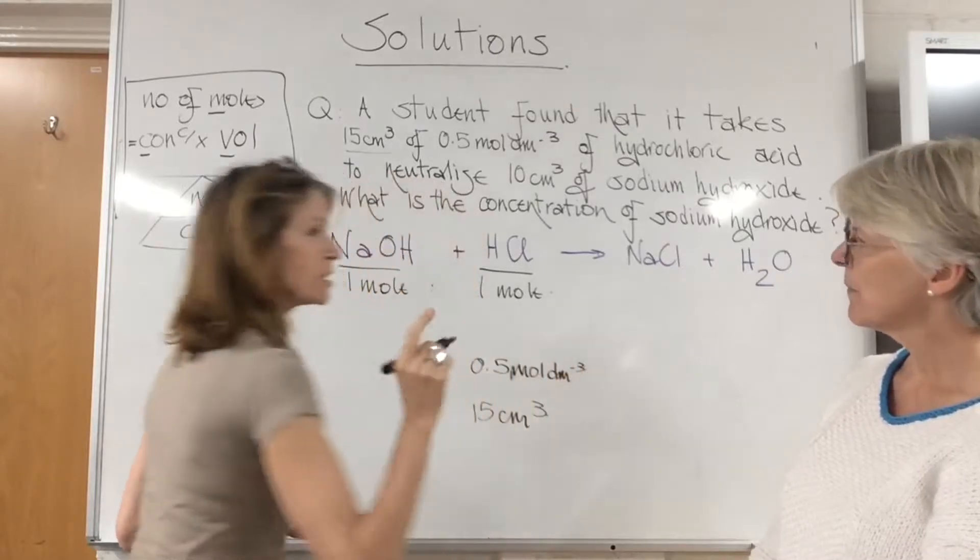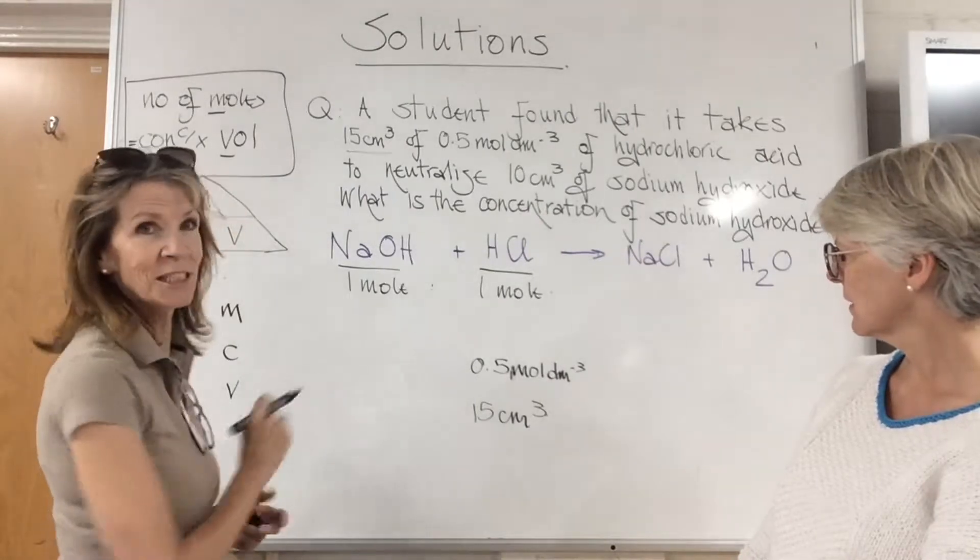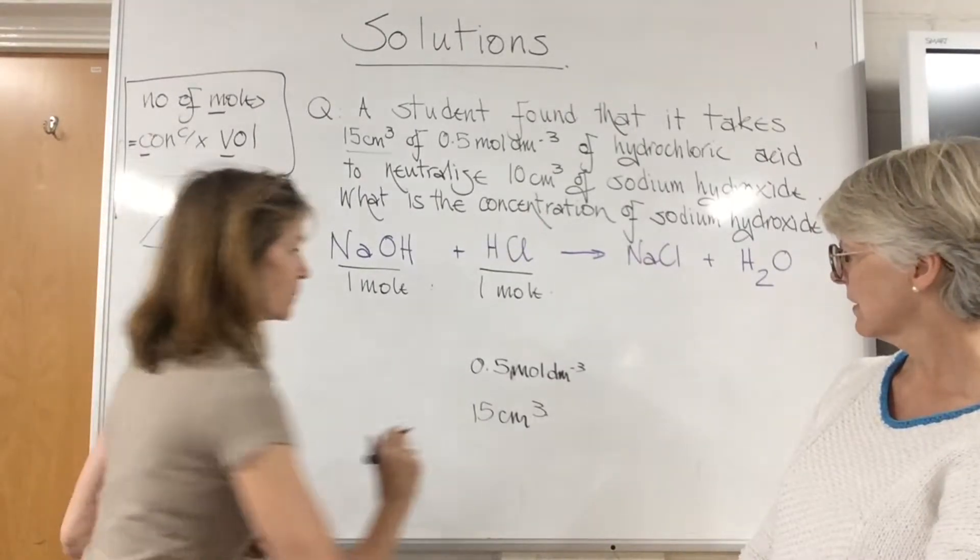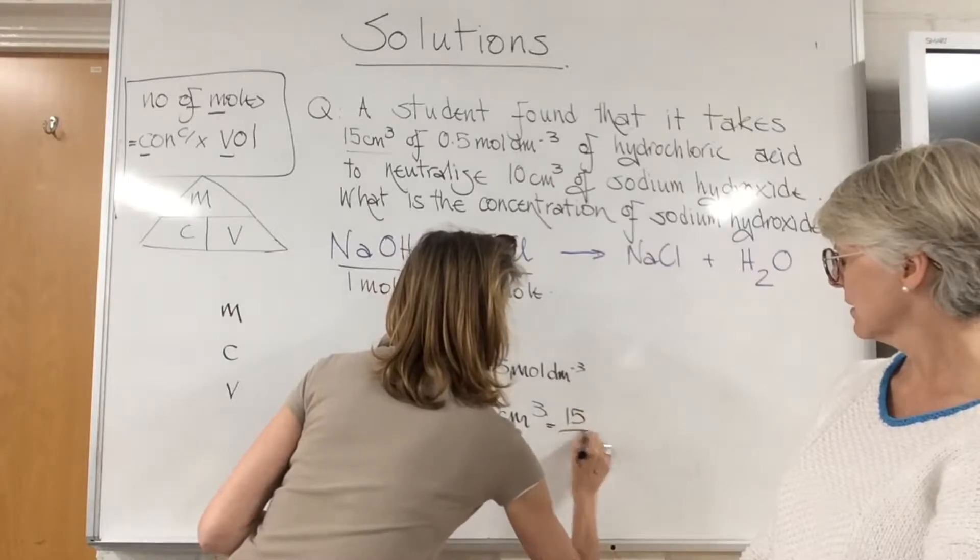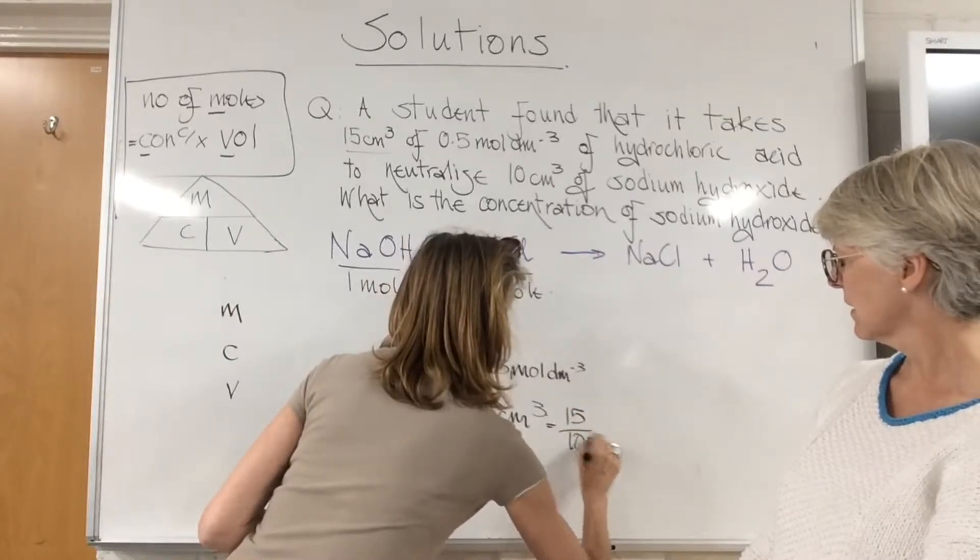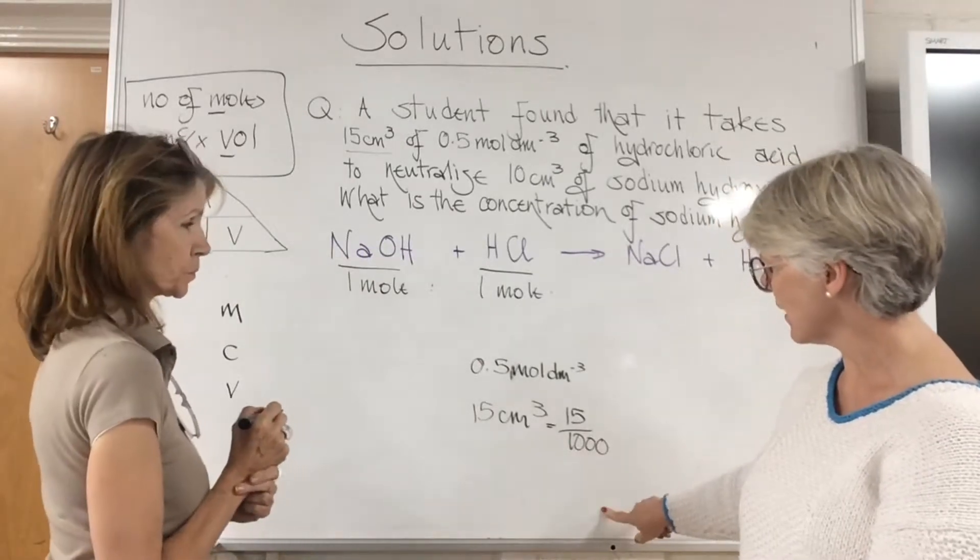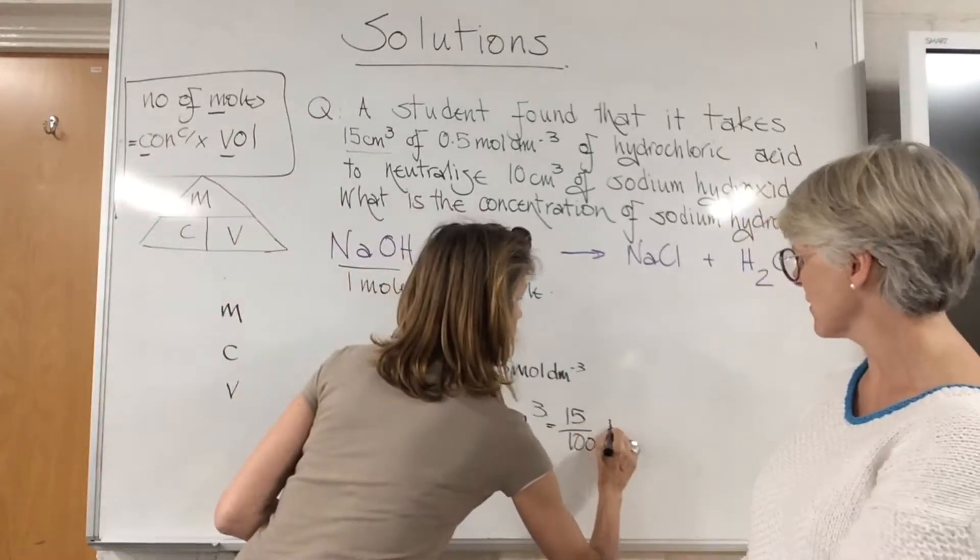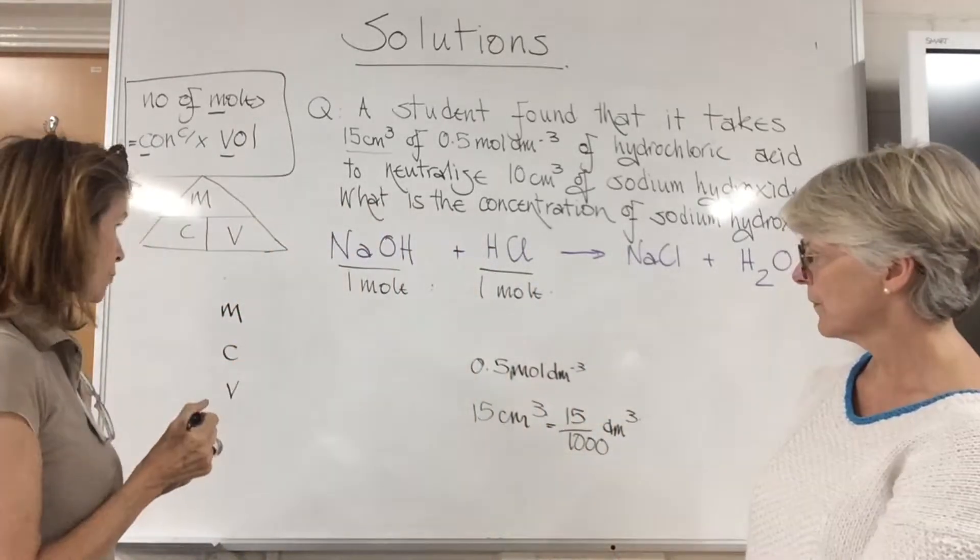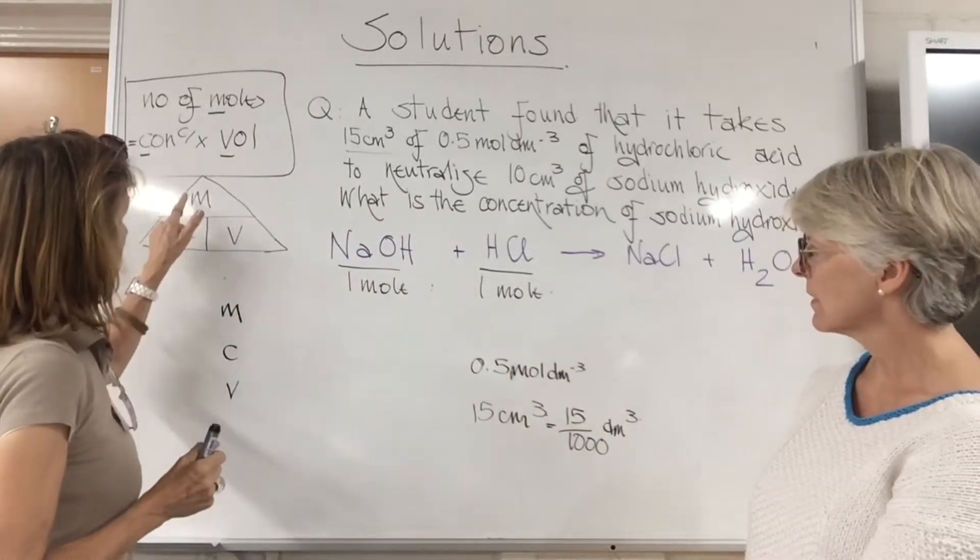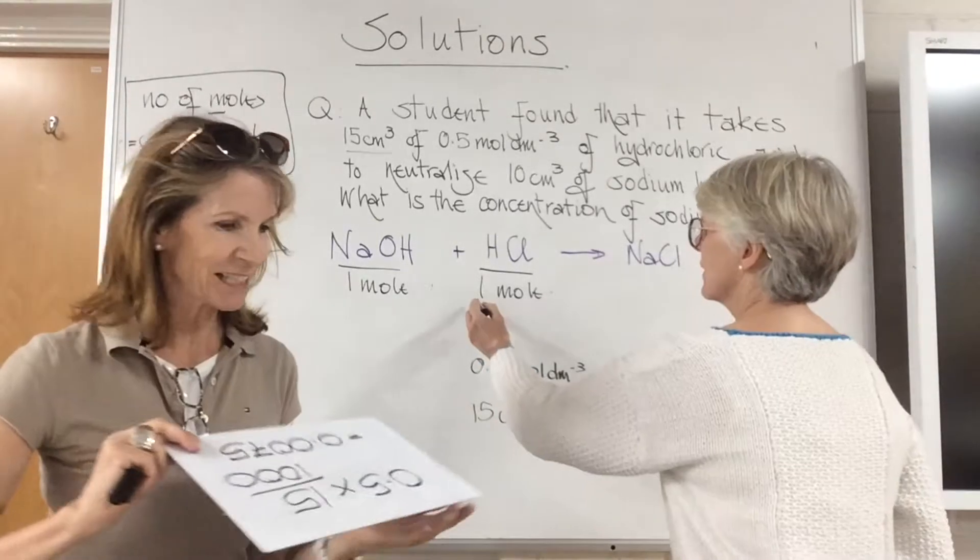We have 15 cm³ and the concentration is 0.5. I did listen to your last blog, and you have to convert 15 cm³ into dm³, and that would be 15 over 1000, because cm to dm³ you divide.